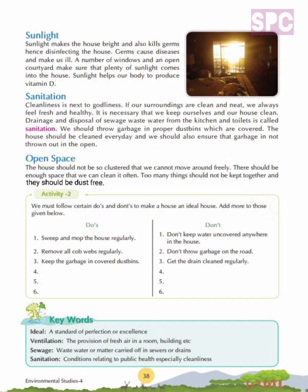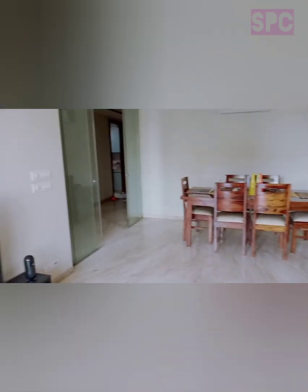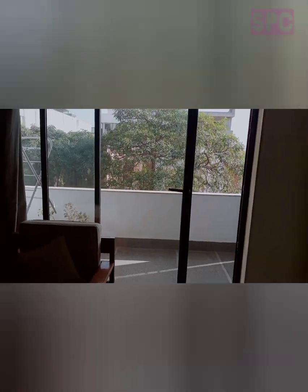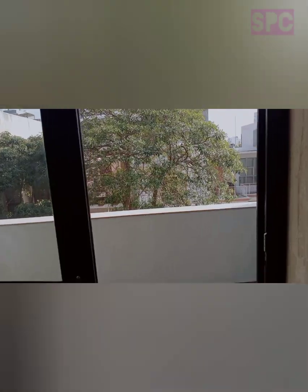Let's move on to the next feature of an ideal house: open space. The house should not be so cluttered that we cannot move around freely. There should be enough space that we can clean it often. Too many things should not be kept together and they should be dust free. We should have enough open space in our house so that we can move around freely. Open space reduces stress and encourages physical activity.